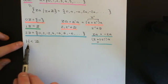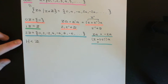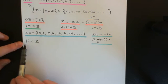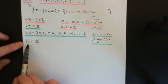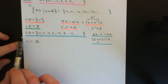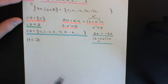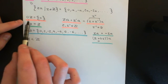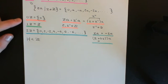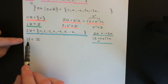Either H doesn't contain any positive integers and therefore it has to be the 0Z subgroup, or H does contain some positive integers and then it's not 0Z. Why can it not be the case that you have a subgroup which contains only non-positive integers? How can it possibly be closed under inverses if you only have negative integers and no positive integers? If you only had negative integers then you wouldn't have inverses, so it wouldn't satisfy Axiom 4 and wouldn't be a subgroup.